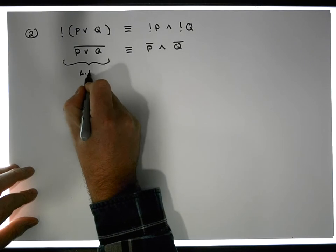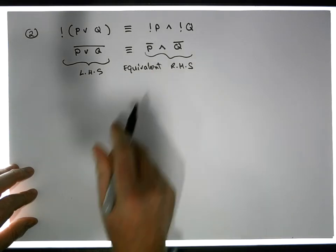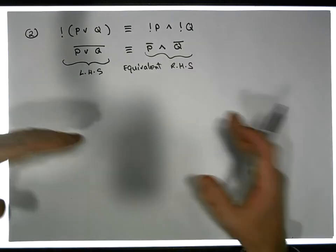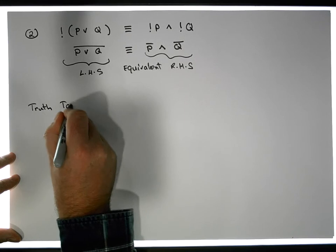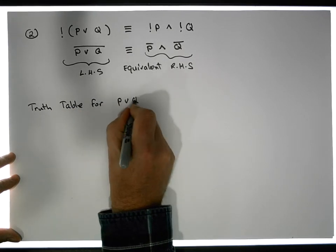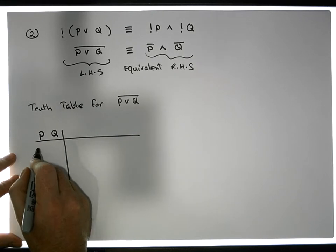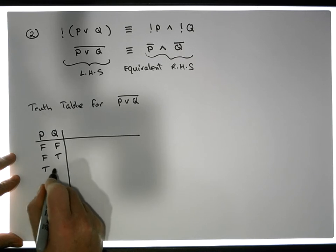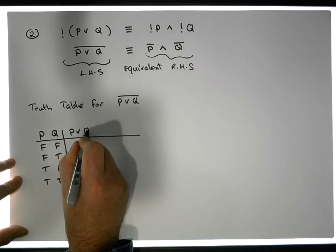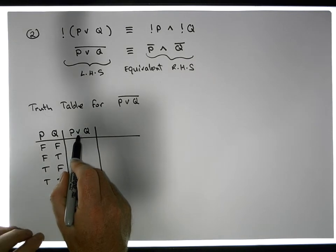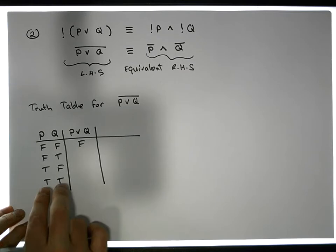We'd like to show that the left-hand side is equivalent to the right-hand side, and we'll do it by building a truth table for each side and showing that under all possible inputs they give the exact same output. For the left-hand side — the truth table for p-or-q bar — the inputs are p and q. All possible pairings are: false-false, false-true, true-false, true-true. Before we can apply the bar we need to evaluate the or. An or is only ever false when both inputs are simultaneously false, so we get false for that row and true for all others.